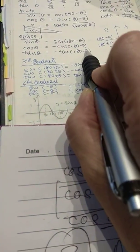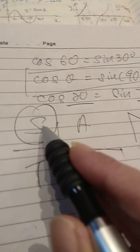Tangent theta is also the same as minus tangent 180 minus theta. They are minus because in the second quadrant, only sine is positive, that's why the other two are negative.